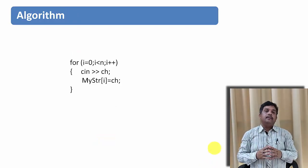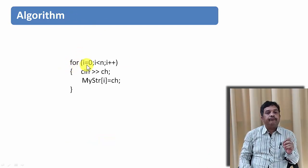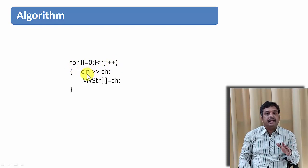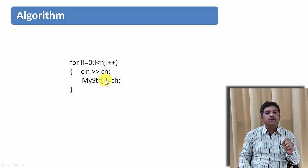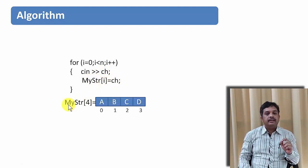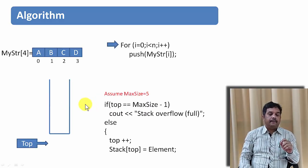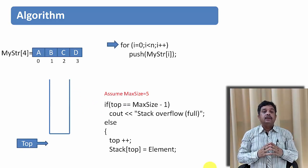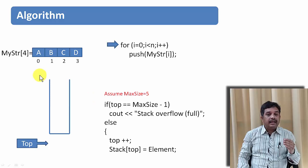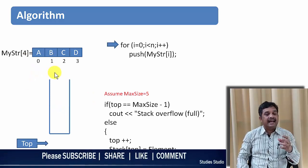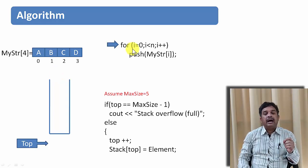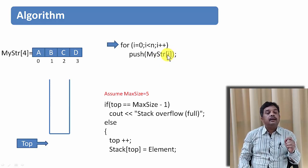So let us try to read characters into my string. I will take a for loop: for i equal to 0, i is less than n, i++. I read a character into CH and assign CH to that particular location in the string. So if my string length is 4 and I read A, B, C and D, then in the algorithm, for i equal to 0, i less than n, i++, I am pushing the i-th index of my string into the stack.